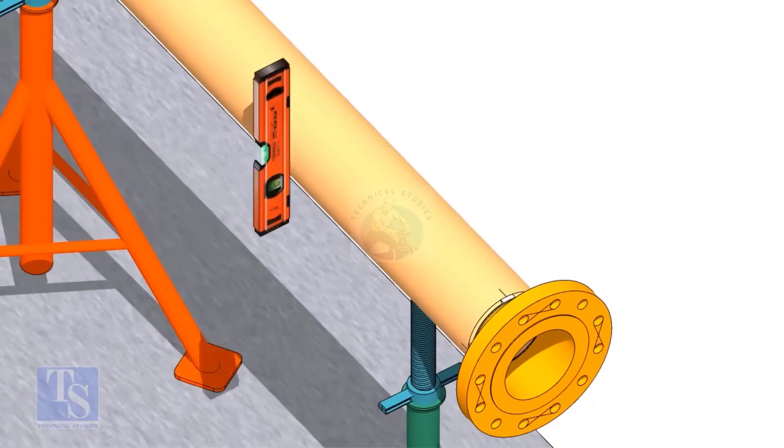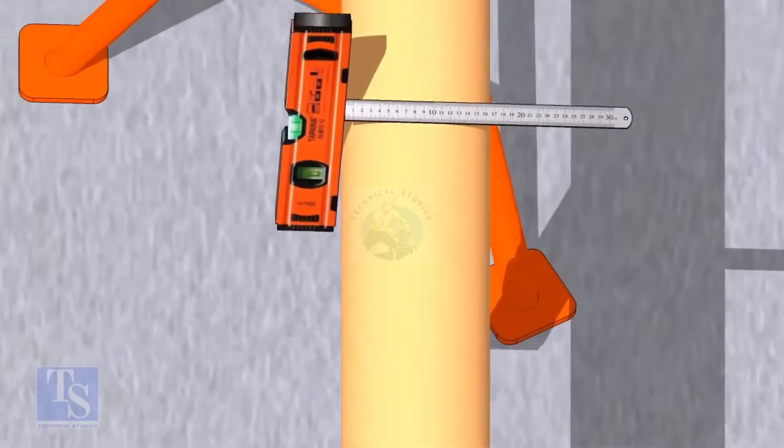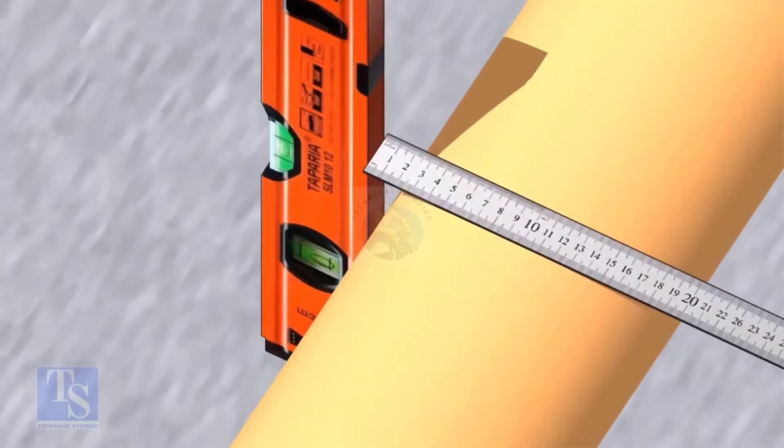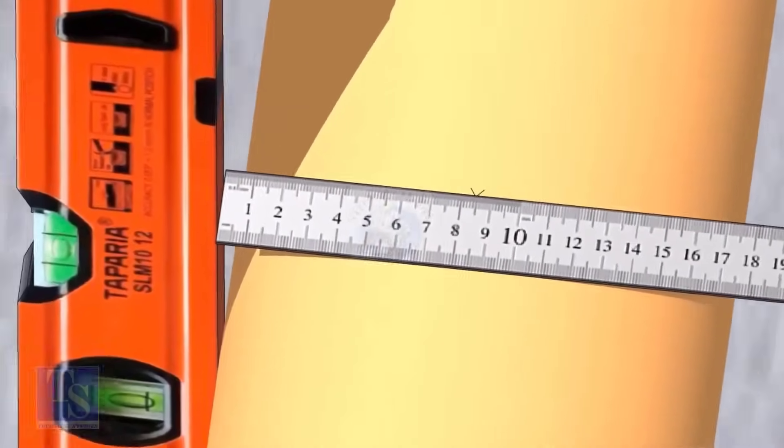Then, choose a point roughly 595 millimeters away from the flange face. Mark the center line of the pipe. Since the outer diameter of a 6-inch pipe is 168 millimeters, mark half of it, that is 84 millimeters, as shown.